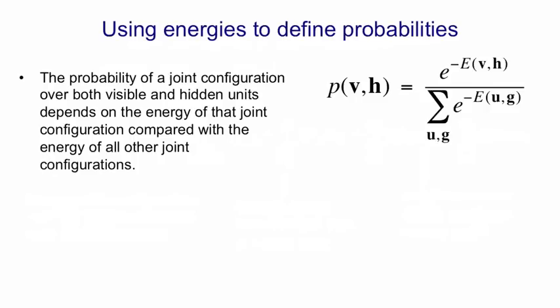So the way we use the energies to define probabilities is that the probability of a joint configuration over V and H is proportional to E to the minus Vh. To make that an equality, we need to normalize the right-hand side by all possible configurations over the visible and hidden units.